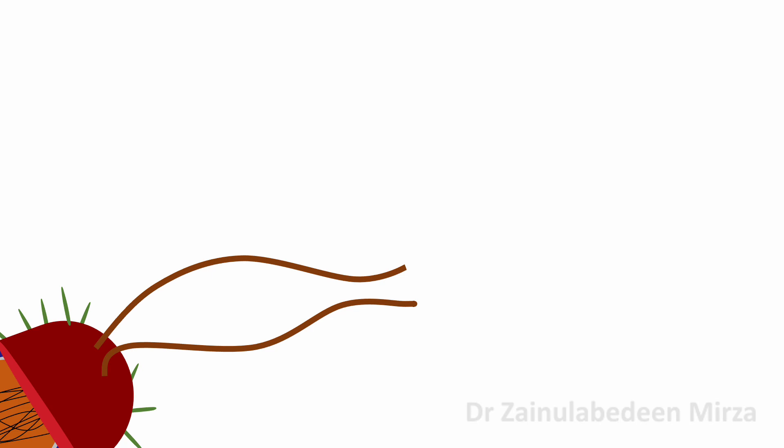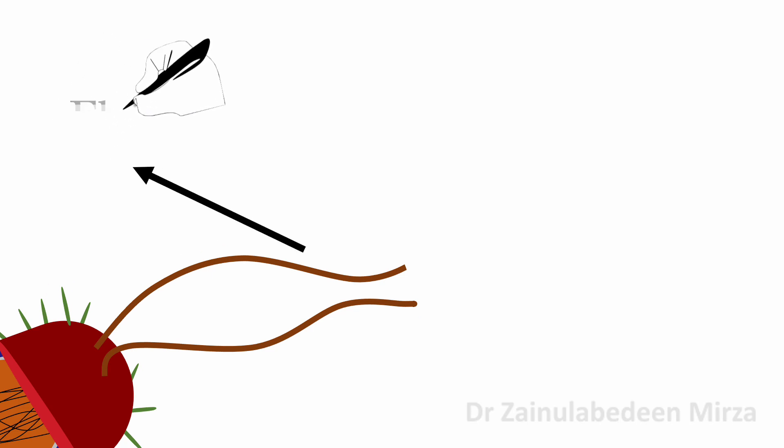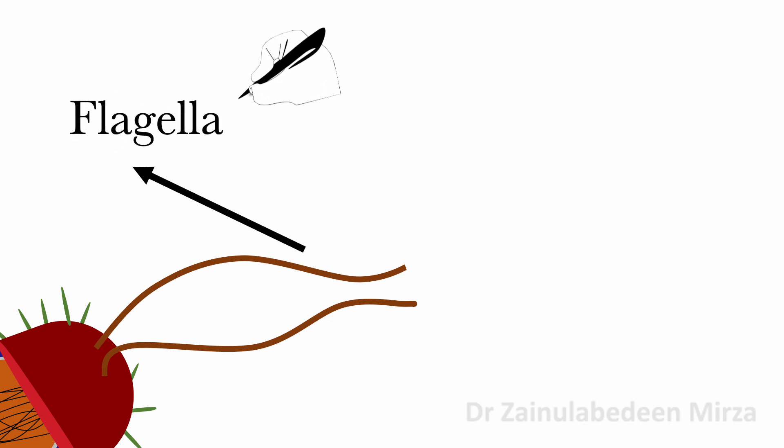Prokaryotic cells, as shown in the image, have a flagella, which is like a long protrusion, and it is used both for gram-positive and gram-negative bacteria.